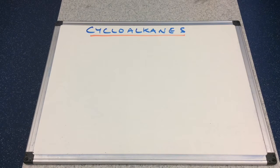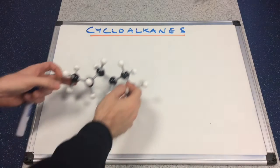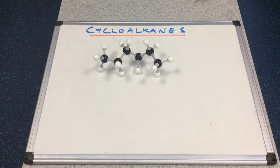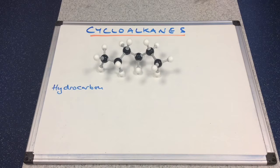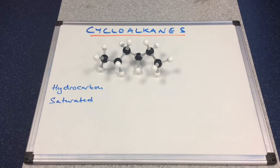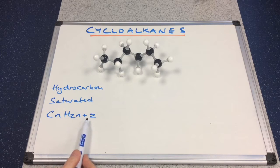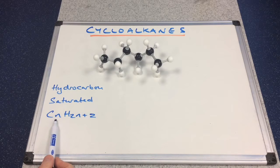In this video, I'm going to take a look at cycloalkanes, sometimes known as cyclic alkanes. But before I do, let's just remind ourselves the key points about regular alkanes. I've made a model of hexane to illustrate the key points. Alkanes are hydrocarbons because they contain carbon and hydrogen only. Alkanes are saturated because the carbons are connected by C-C single bonds, and they have the general formula CnH2n+2. So in the case of hexane where n equals 6, we would have 2×6 = 12 plus 2, giving 14 hydrogens.